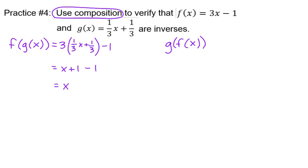G of f of x, we're putting f of x on the inside of g. So we have one-third times f, and then finishing off g, we need to add the one-third. Distribute the one-third, and then combine the like terms, and we get x. So there's our verification, or our proof, that these are inverses.